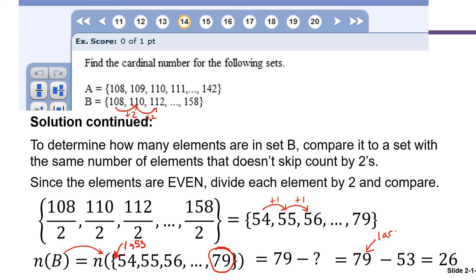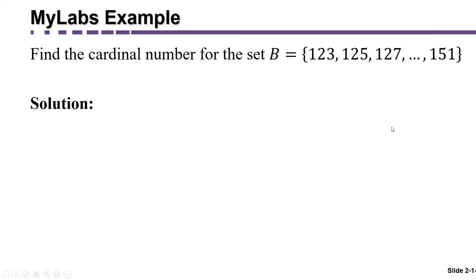Once again, 79 is the largest element in the set that we're counting, and 53 is one less than the smallest. But this only works when we look at a set that increases by one each time. So the answer to part B is 26. Let's look at another example. This example is a little bit different. In this case, we're finding the cardinal number for the set B, and it's skip counting by how much. If you said two, you're correct. We're going up by two each time. That appears to be the pattern. We're going from 123 up to 151.